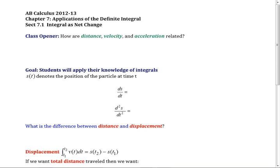If I call distance — I don't want to call it D, because then you have dD/dt and it's just not nice. How about we call it S? S is equal to your position. That's done.